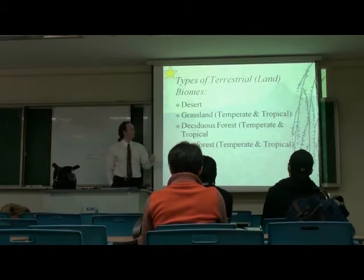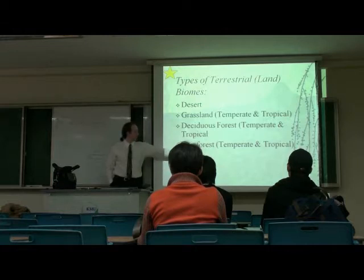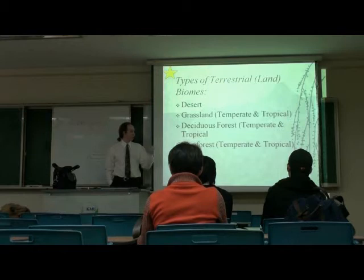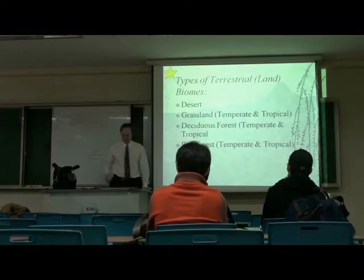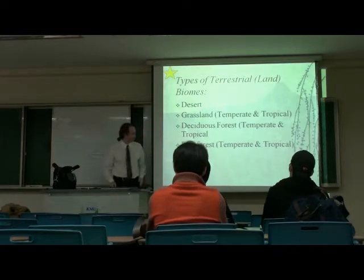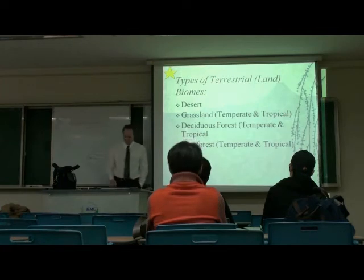Rainforest also has different cultures. Taiga is the tall forests built over permafrost. And tundra is a treeless desert of snow, typically seen around the Arctic Circle.